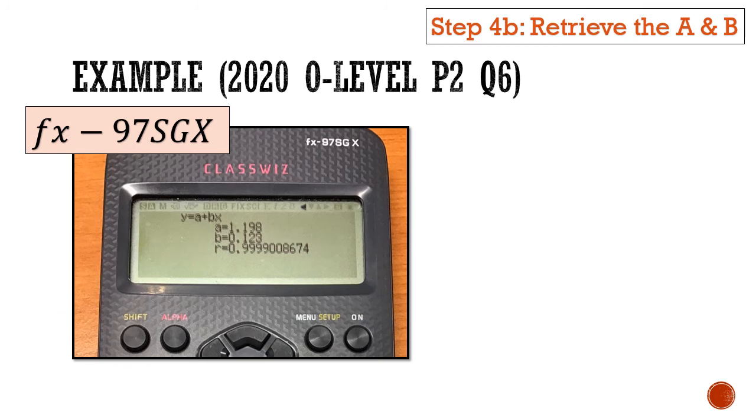Whereas if you're using the fx-97SGX, the display is way better. Firstly, all the display is available on a single screen. You're also reminded that the equation is y equals A plus Bx, in case some people forget which one is the y-intercept and which one is the gradient. This reminds you immediately. You also see the R value. The R value, basically you're expecting a number very close to 1, so 0.99 something. It just tells you that all the points fit nicely on a straight line. If you were to draw the graph, you'll be expecting an upward sloping graph with a gradient of 0.123 and a y-intercept of 1.198.